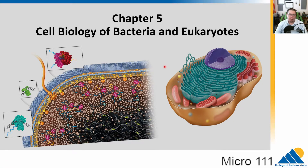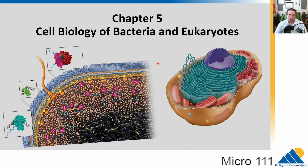Welcome to the second half of Unit 4. In Chapter 5, we're going to talk about cell biology. We'll start with bacteria, which we'll focus on mainly, and then we'll talk a little bit about eukaryotes, which include us and some eukaryotic parasites that can cause disease.